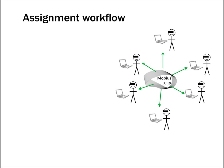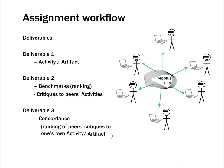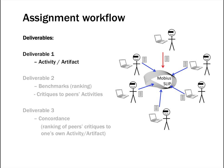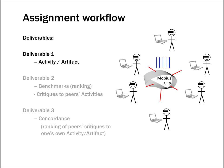The assignment requires the student to submit three deliverables. Deliverable 1 is where the student creates and submits an activity or artifact — in this case, the artifact is an essay. Students submit their essays, and then the Mobius SLIP automatically redistributes them out to every other member of the group. In other words, each member has to read five other members' essays.